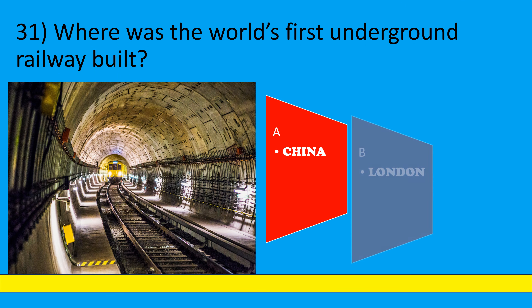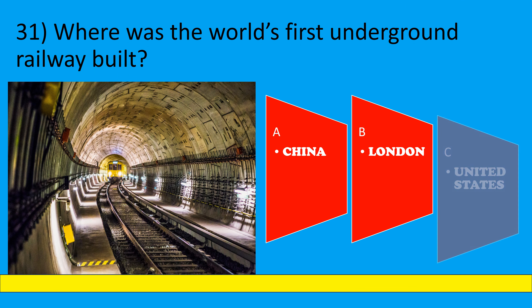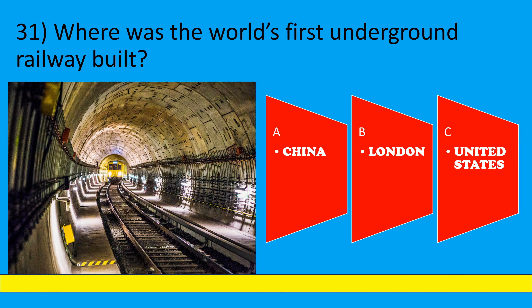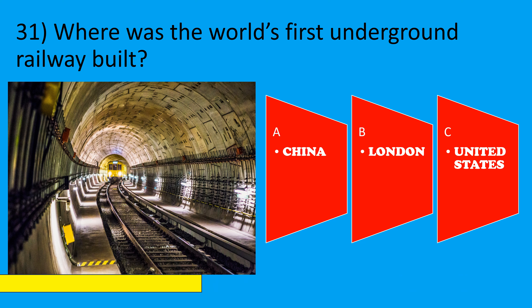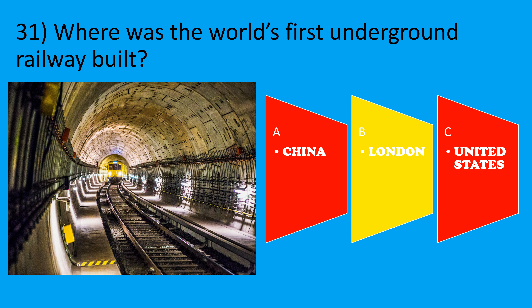Where was the world's first underground railway built? A: China, B: London, C: United States. The correct option is B, London.